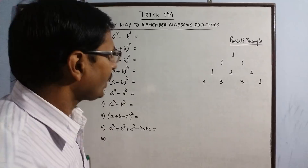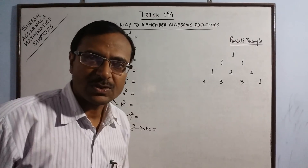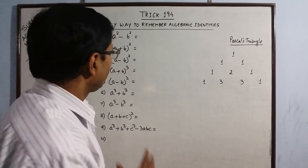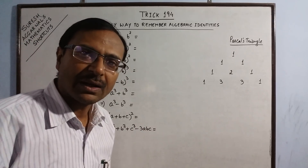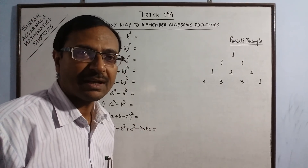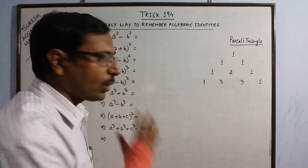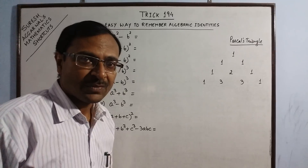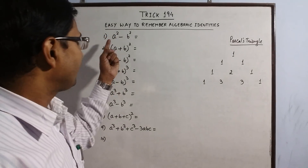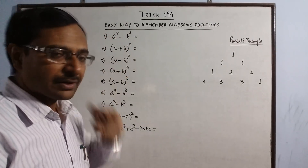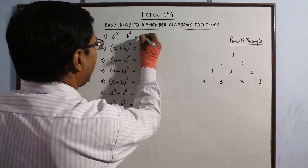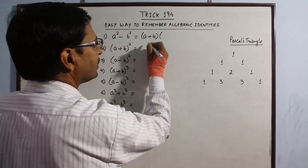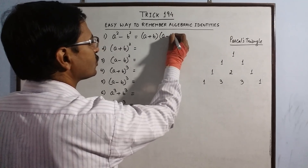Now let me demonstrate how the first identity A square minus B square works. It is a very simple identity used in many questions at class 8th, 9th, 10th level and also in competitive exams, finding wide applicability especially in clerical grade examinations. Whenever we have the squares of two numbers subtracted, we add the two numbers once and take its product with the difference of those two numbers.